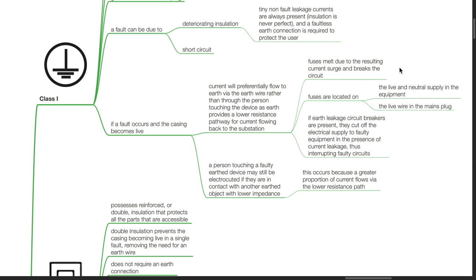Earth provides a lower resistance pathway for current flowing back to the substation. Fuses melt due to the resulting current surge and break the circuit. If earth leakage circuit breakers are present, they will cut off electrical supply in the presence of current leakage. A person touching a faulty earthed device may still be electrocuted if they contact another earth object with lower impedance, as greater current flows via the lower resistance path.